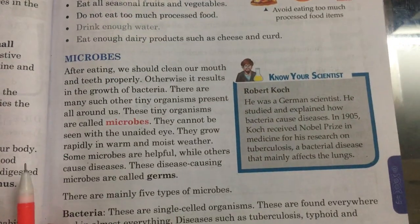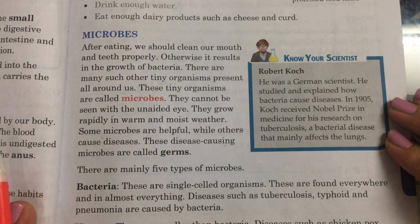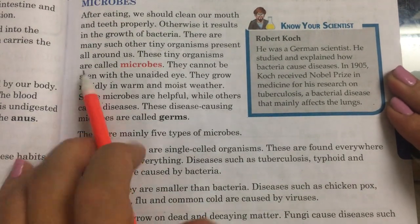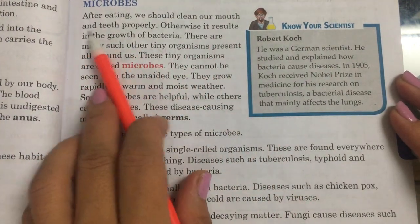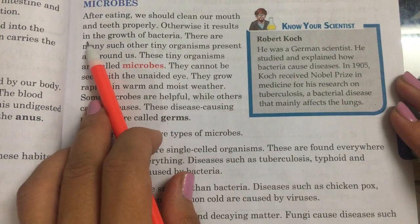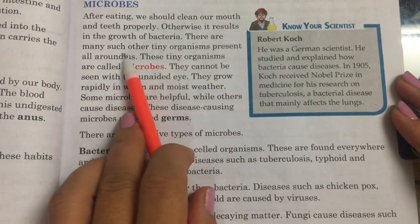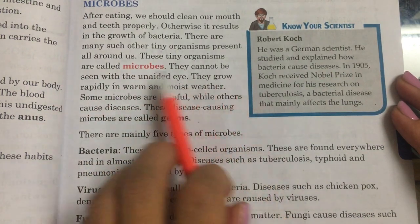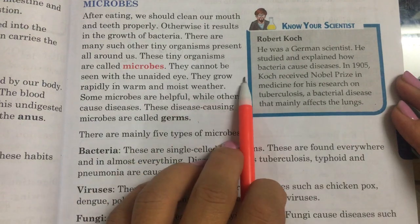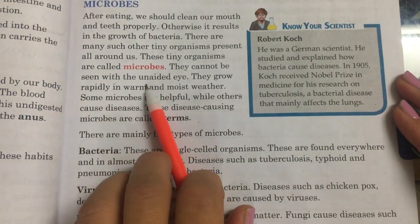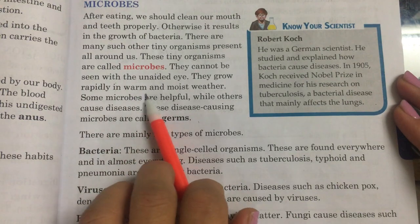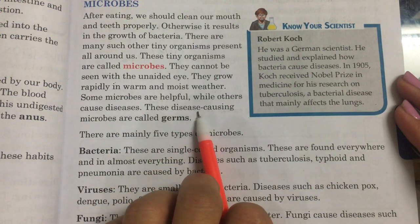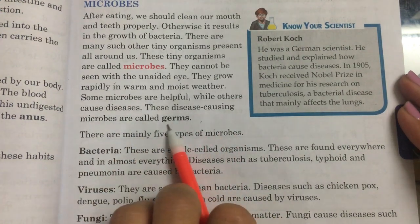Now, microbes. After eating we should clean our mouth and teeth properly; otherwise it results in the growth of bacteria. There are many such tiny organisms present all around us. These tiny organisms are called microbes. They cannot be seen with the unaided eye. They grow rapidly in warm and moist weather. Some microbes are helpful while others cause diseases. These disease-causing microbes are called germs.